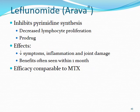Leflunomide specifically inhibits pyrimidine synthesis, decreasing lymphocyte proliferation. It is a prodrug activated within the liver. Effects include decreased symptoms, decreased inflammation, and hopefully decreased joint damage. Benefits can be seen within one month, and efficacy is generally comparable to methotrexate. Methotrexate is often preferred due to its long safety record, but leflunomide is a decent alternative.